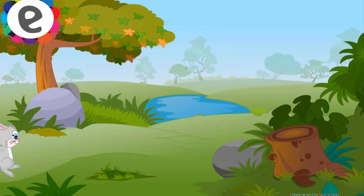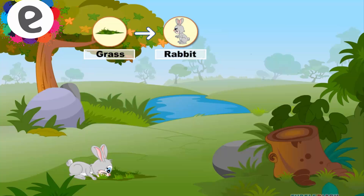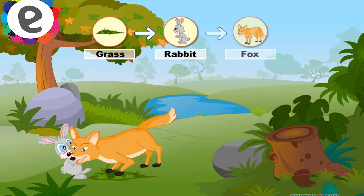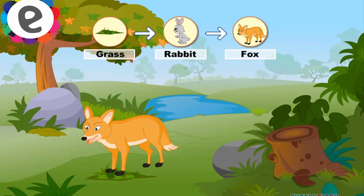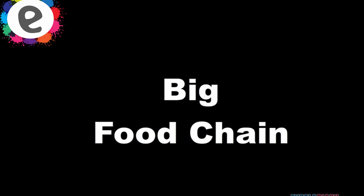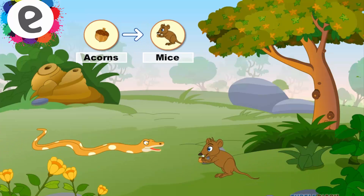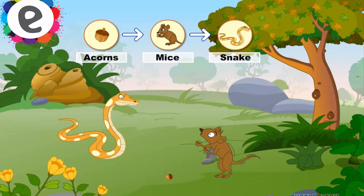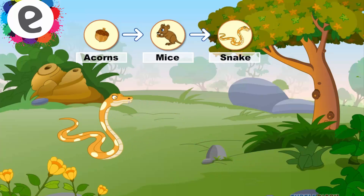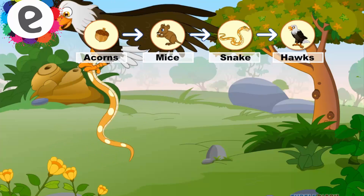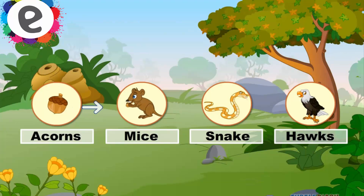A simple food chain starts with grass which is eaten by rabbits. Then the rabbits are eaten by foxes. A bigger food chain starts with acorns which are eaten by mice. The mice are eaten by snakes, and then finally the snakes are eaten by hawks. At each link in the chain, energy is being transferred from one animal to another.